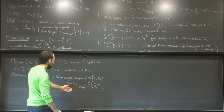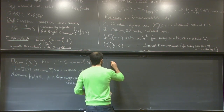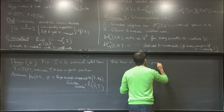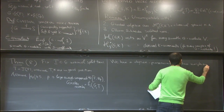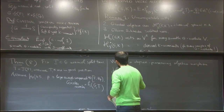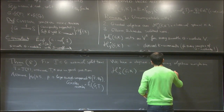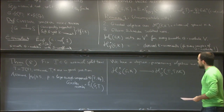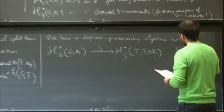This Coxeter number is just a combinatorial avatar depending on the root datum of (G, T). For instance, if my ground field is just Q_p, I literally just need P to be greater than the Coxeter number. So under this setup, we have a degree-preserving algebra map — which I'll call S for Satake — between the derived Hecke algebra of (G, K) into the one for (T, T ∩ K).